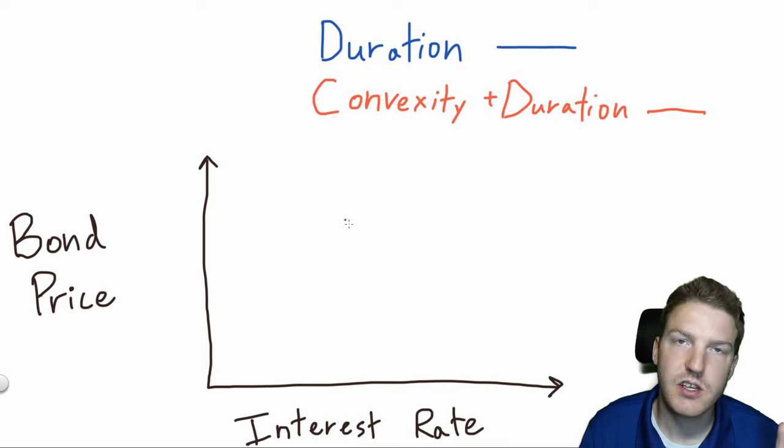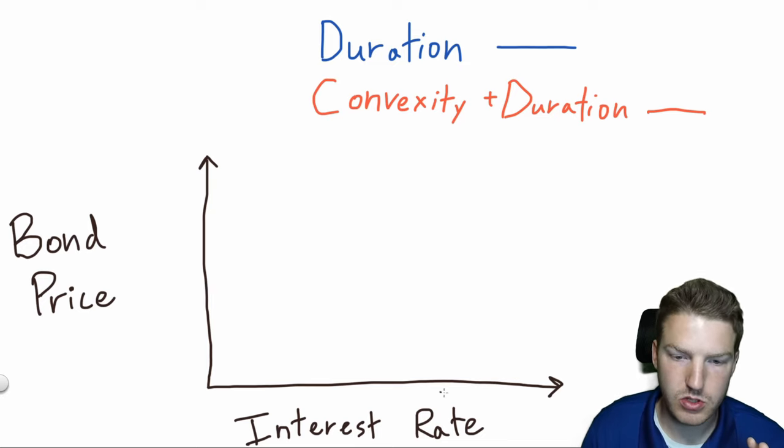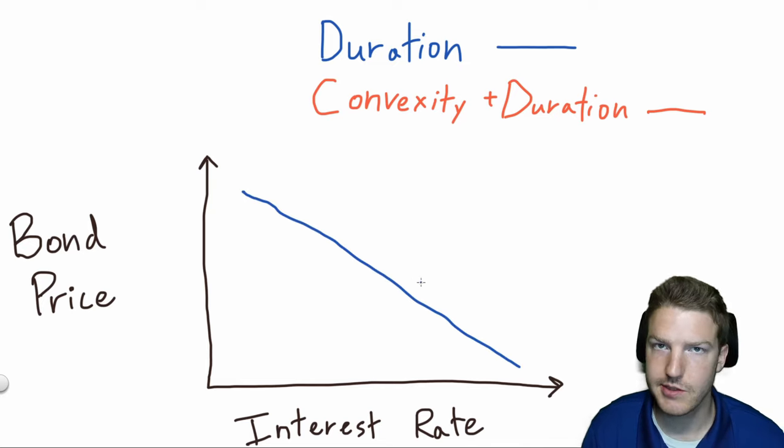So here we have the exact same graph as we just made in Excel. We have interest rates on the horizontal axis and bond price on the vertical axis. If all we do is account for bond duration, we'll see that when interest rates decrease or when interest rates increase, bond price decreases linearly. Assume that's a straight line.